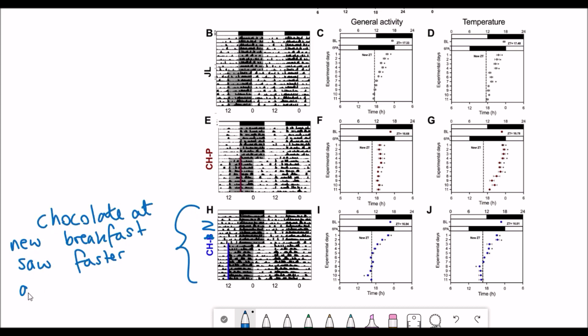Anyway here are some of the results that they got. What they found was the rats that had chocolate at the new breakfast time saw a faster adjustment to the jet lag, and this was in terms of their general activity and temperature which are both circadianly regulated.